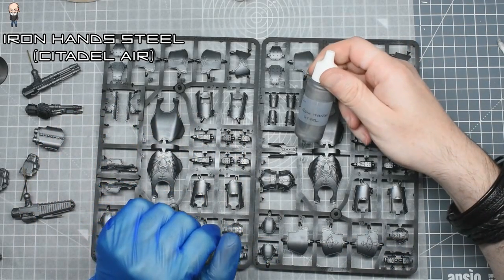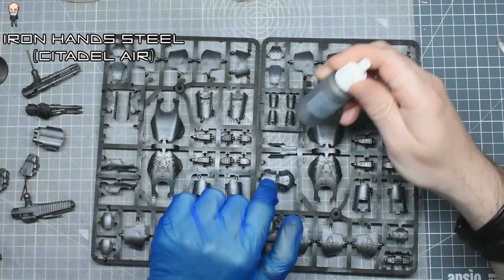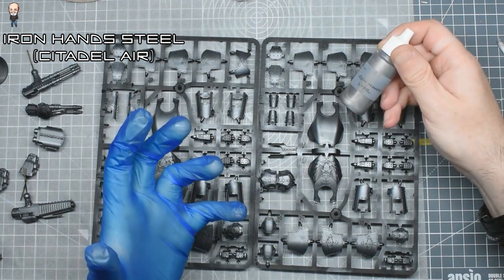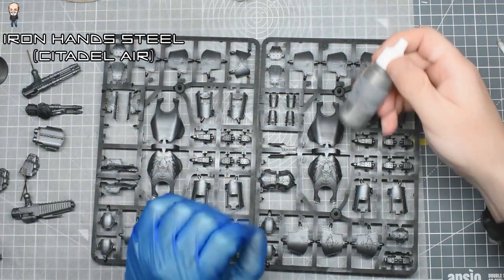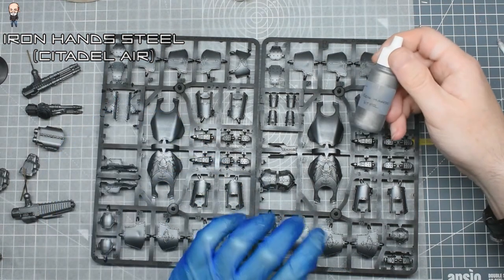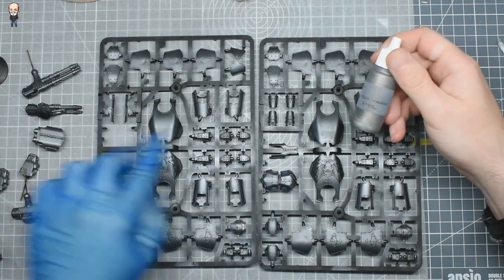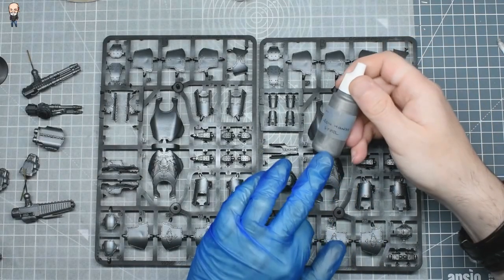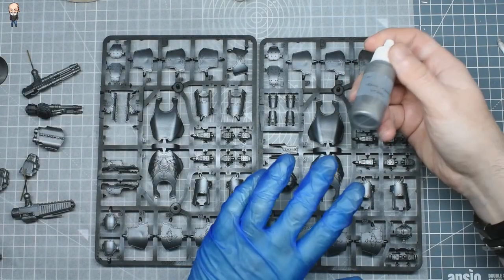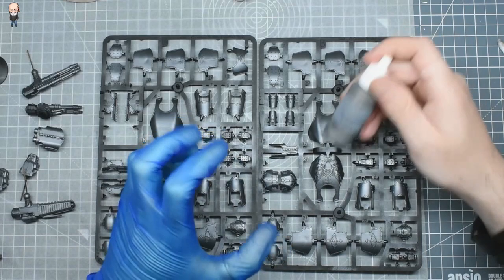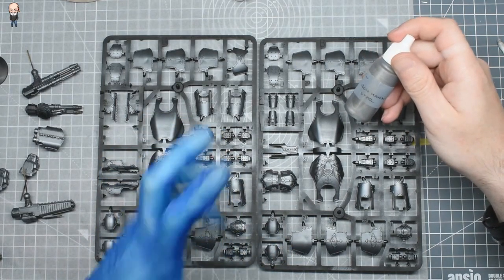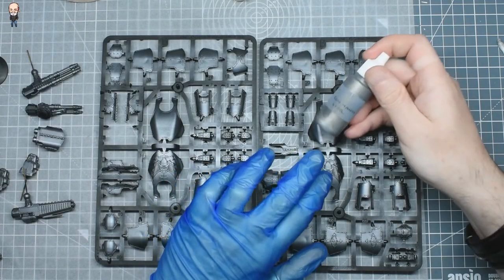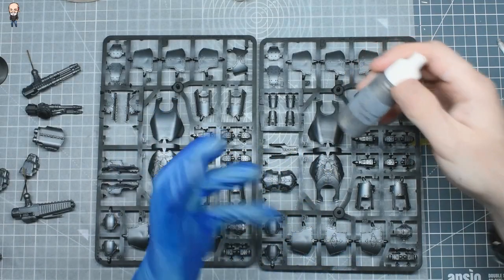The paint I will be using is Ironhand Steel. This is the Forge World one but they've converted that into the main Citadel range so it's fine. This I would say in tone is very similar to Citadel's Dawnstone. So if this were Standard Mechanicus Grey, this would be Dawnstone. It's a steel not a silver. You'll notice that when you look at these paints you'll realize what that means. This has still got quite a bit of grey, you wouldn't say silvery, it's still a grey steely color.